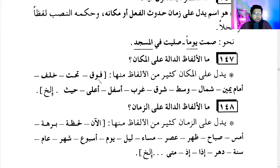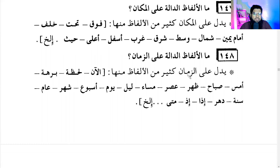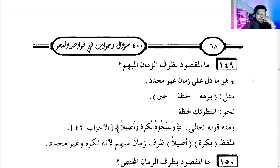What are the words indicating place? Many words indicate place: fawqa (above), tahta (under), khalfa (behind), amama (front), yemina (right side), shemal (left), bayna (between), sharq (east), gharb (west), asfala (below), 'ala (above), hayth (wherever). What are the words indicating time? Lahza (moment), burha (long time), amsi (yesterday), sabah (morning), dhuhr, asr, masa (evening), lail (night), yawm (day), usbu' (week), shahr (month), 'aam/sanat (year), dahran (long time), idha (when/if), mata (when).